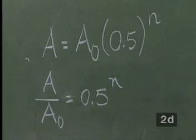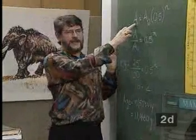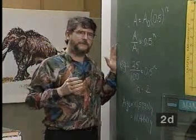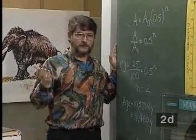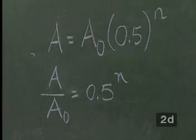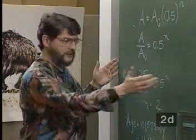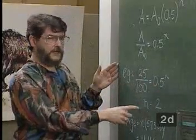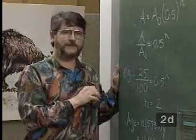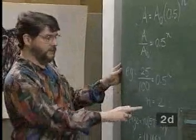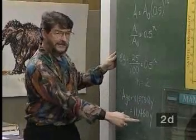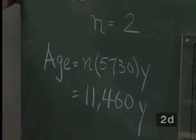We take that value and plug it into our formula here — that would be the value for A, the radioactivity in our fossil sample. A sub zero would be a value for, say, a modern elephant rib. We multiply that by 0.5 to the nth power, and this is the half-life factor in the equation. We solve for n and get 2. N is the number of half-lives, and the half-life of radiocarbon is about 5,730 years. So if our sample is 2 half-lives old, we simply solve: n times that value gives us 11,460 years — that sample is about that old.